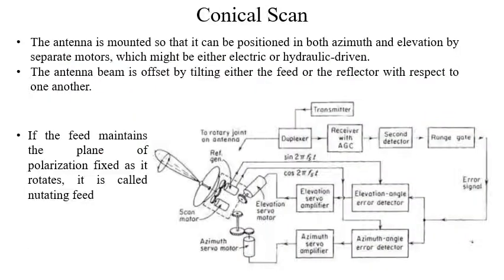The conical scan modulation is extracted from the echo signal and applied to a servo control system which continuously positions the antenna on the target. When the antenna is on the target — when A is on B — the line of sight and rotation axis coincide and the conical scan modulation is zero. This is the block diagram of such a conical scan radar. The antenna is mounted so that it can be positioned in both azimuth and elevation by separate motors, which may be electric or hydraulic driven.